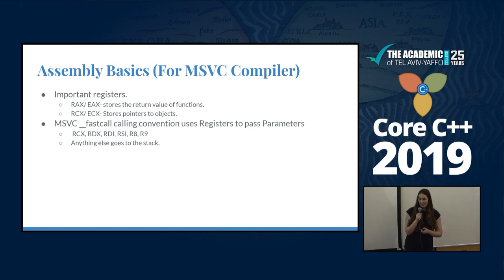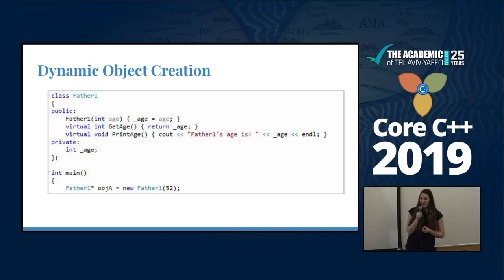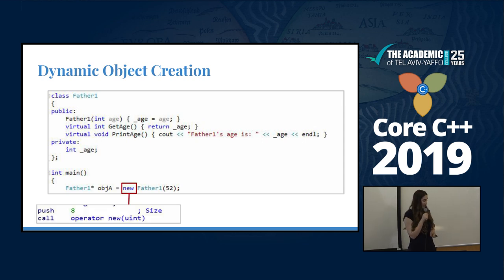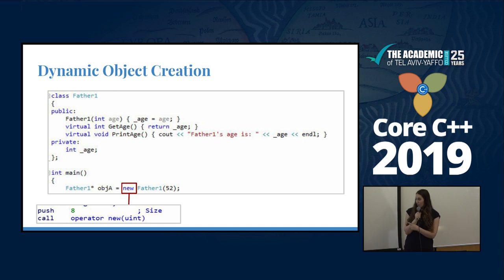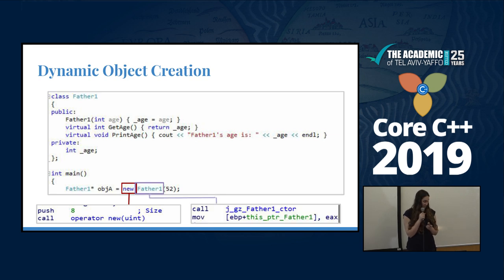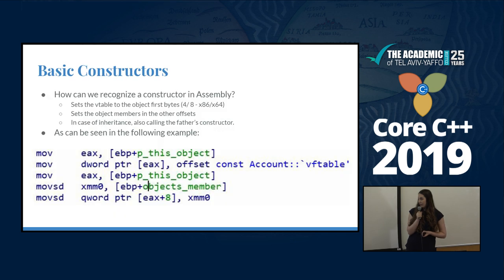C++ concepts in 60 seconds. We have a simple code here that doesn't do anything really important, but the important line is at the bottom — you can see there is a creation of an object. We are going to show the code and the assembly line compiled from it. You have the 'new' keyword; you can see a call for 'operator new', and also a constructor call on the right side.